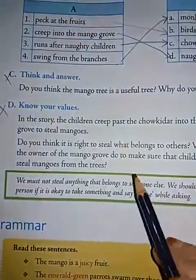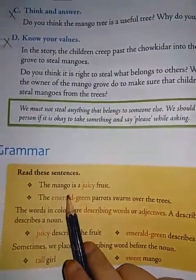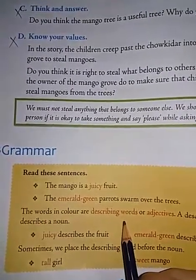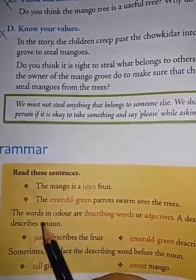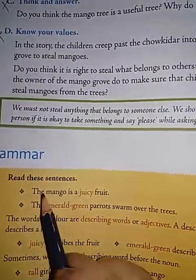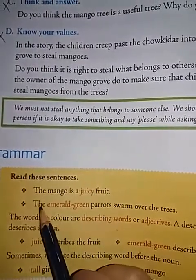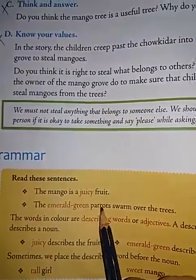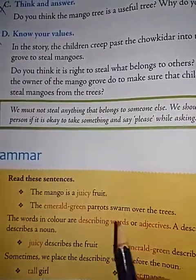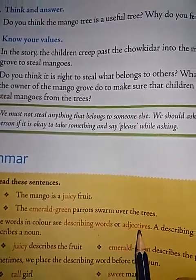Now let us see the grammar part. The grammar topic here is adjective, one of the parts of speech. The words in color are describing words, or adjectives. So, what are the words here? The mango is a juicy fruit. The emerald green parrots soared over the trees. Here, juicy and emerald green are describing words, also called adjectives.